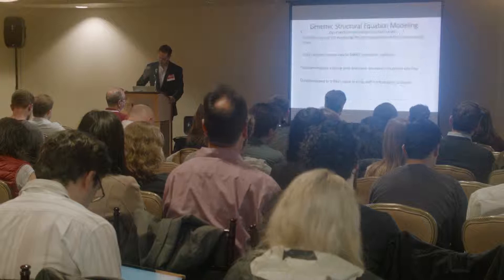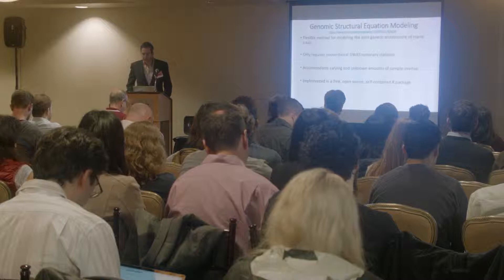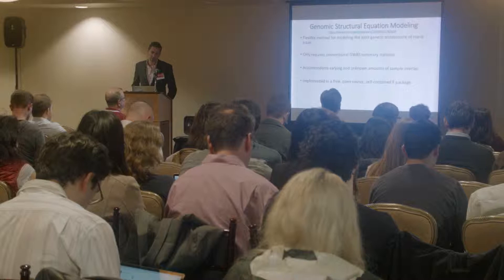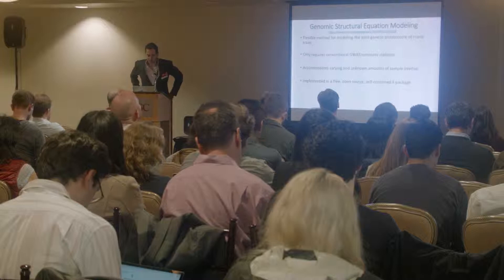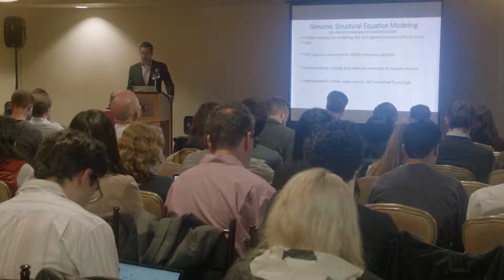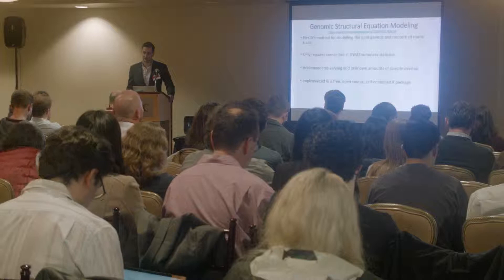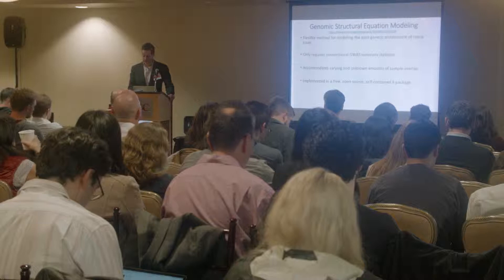This method we've developed is called genomic structural equation modeling. It's a very flexible method allowing the user to specify different models of the genetic architecture of many different traits simultaneously. It only requires conventional GWAS summary statistics, accommodates varying and unknown amounts of sample overlap, and is fairly user-friendly. It's implemented in a free, open-source, self-contained R package, ready to download and use today with a wiki and examples all online.